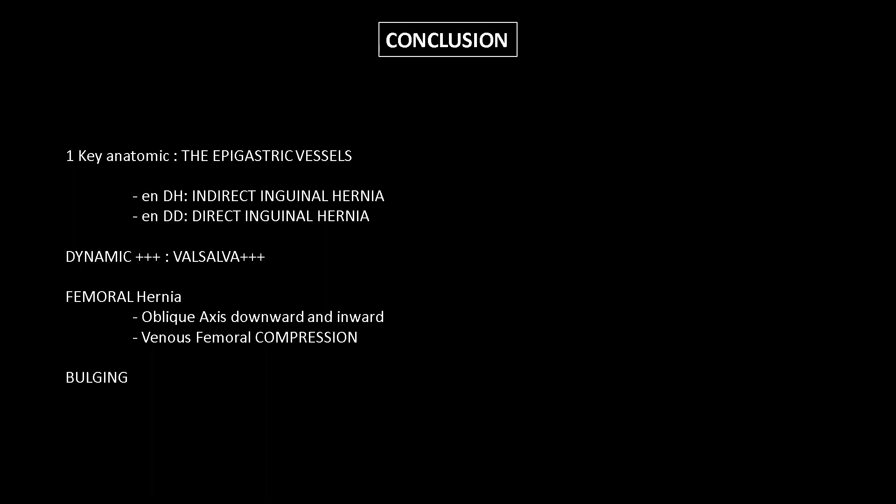In conclusion, ultrasound exploration of hernias is more difficult in theory than in practice. It is important to remember the key anatomical element — the epigastric vessels — which will allow us to distinguish indirect inguinal hernias located outside from direct inguinal hernias located inside. The other essential point is the realization of a dynamic examination with mainly Valsalva manoeuvres. Regarding the femoral hernia, which is much rarer, it is necessary to retain its axis of exploration downwards and inwards and the key element to look for: the compression of the femoral vein. Finally, the hernia of the sportsman — which we look for in groin pain — with exteriorization of non-epiploic tissue between the rectus abdominis muscle and the epigastric vessels.